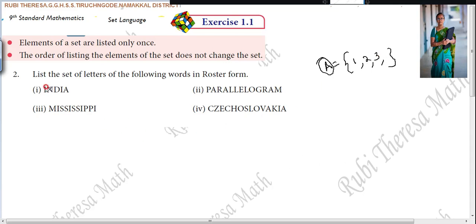First let us take the first problem. They have asked you to write in roster form. India - when you are representing the set, since there is no P, I am choosing P here. So what are the elements? I, comma, N, comma, D, comma, I - is it necessary to write once again? No. Here you see, elements of your set are listed only once. Only one time you have to list the element.